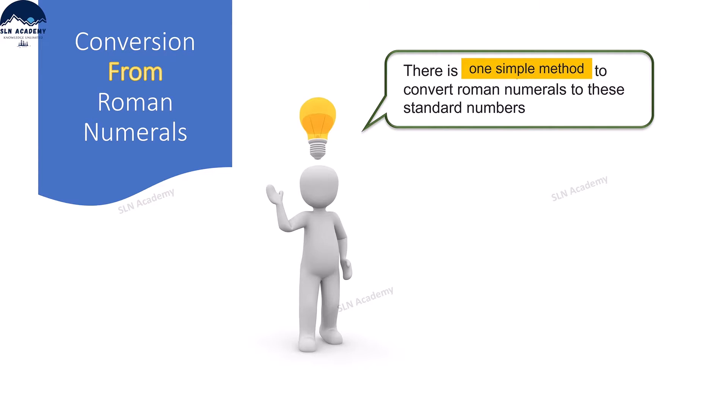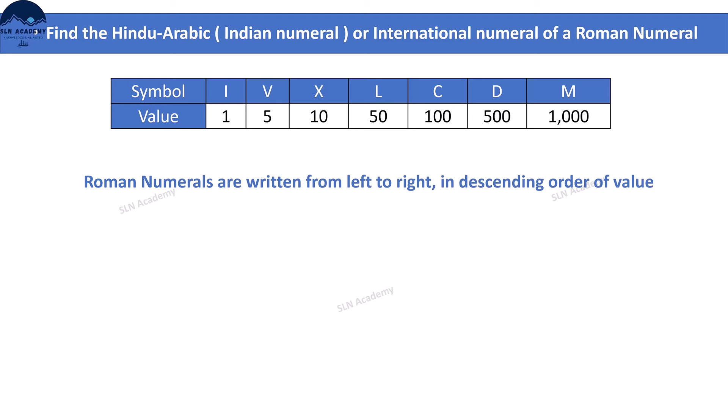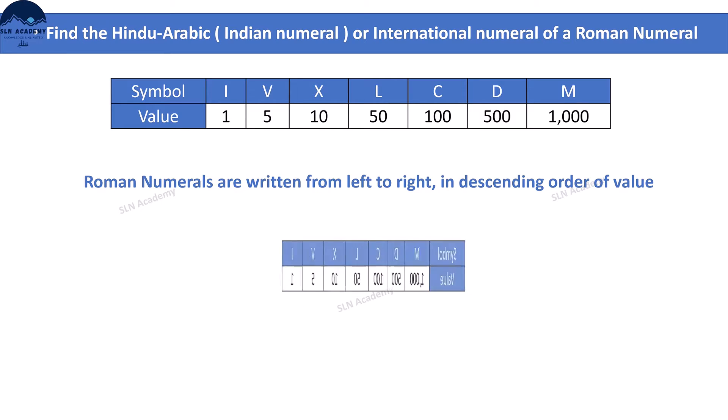To find the value of a Roman numeral, or to convert the Roman numeral into standard number format, first recollect the Roman number system chart. As Roman numerals are written from left to right in descending order of value, arrange the values in the Roman numbers chart in descending order.